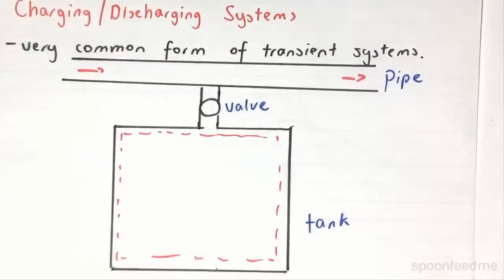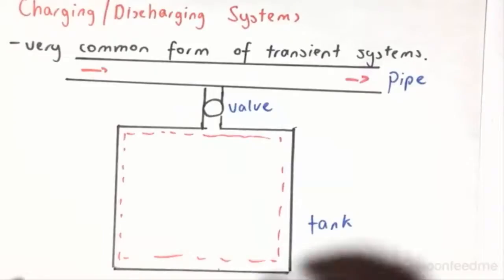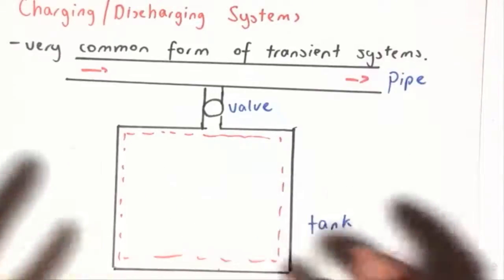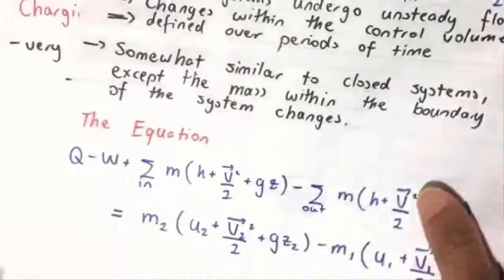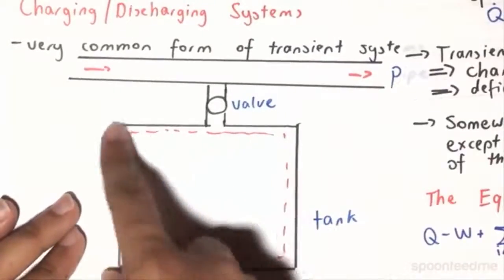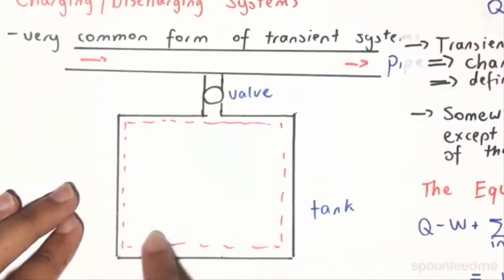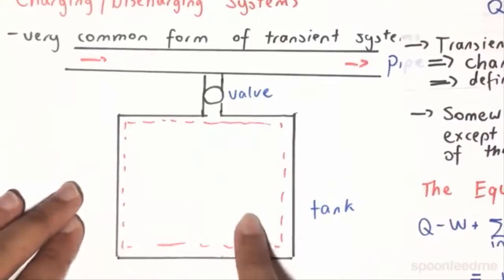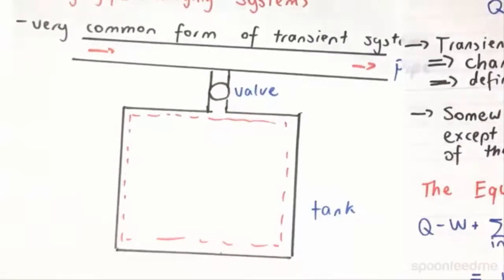And similarly, discharging systems is when we have a whole bunch of fluid within here, and then we open the valve, and we let that fluid out until it's empty, or until another set period of time. So if you look back at the equation over here, we have this Q minus W. So the Q will depend on whether or not the tank or this area is insulated. And the W will depend on whether or not there is some capability of external work to be done, so if there's like an electrical wire or something.